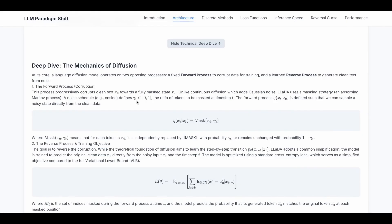A noise schedule, and this schedule can be cosine or some fancy other schedule like the image diffusion, defines gamma_t, a ratio of tokens to be masked at time step t. The forward process q(xt|x0) is defined such that we can sample a noisy state directly from the clean data. In short, we have this expression: q(xt|x0) equals mask function of x0 and gamma_t, where mask function means that for each token in x0, it is independently replaced by a mask token with probability gamma_t.